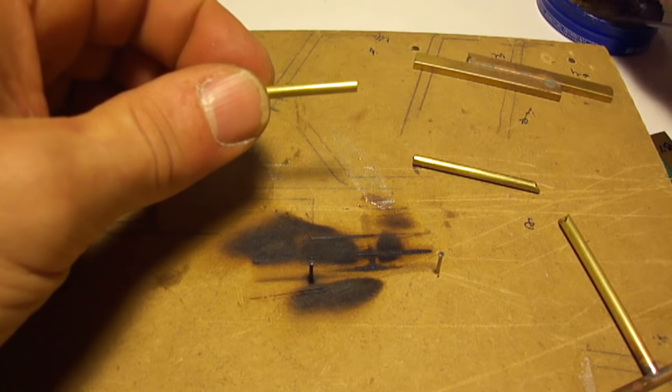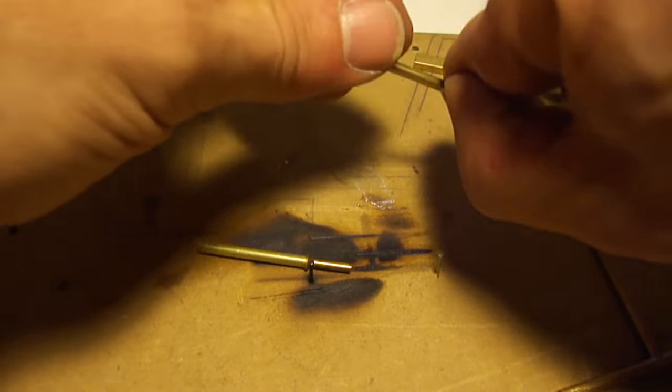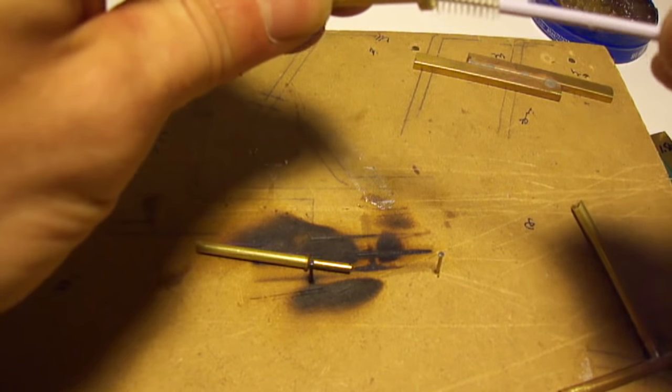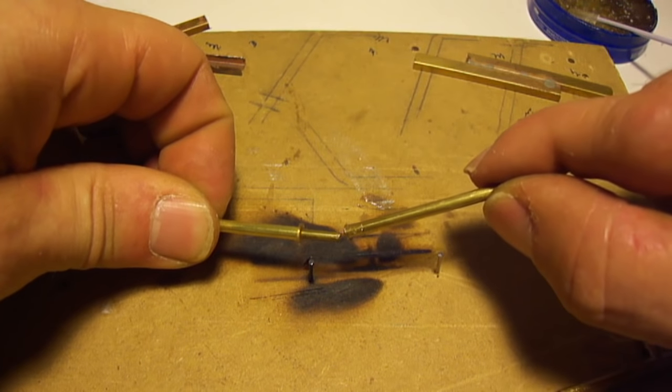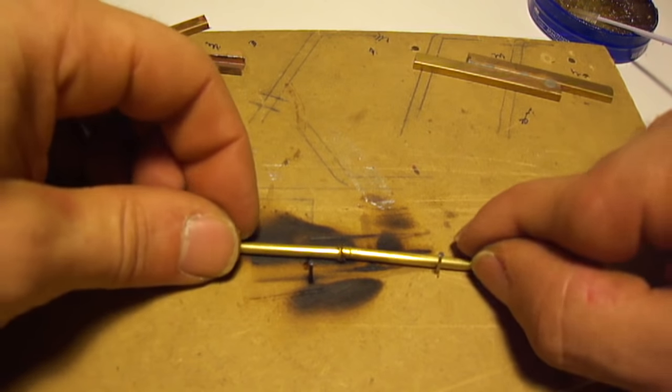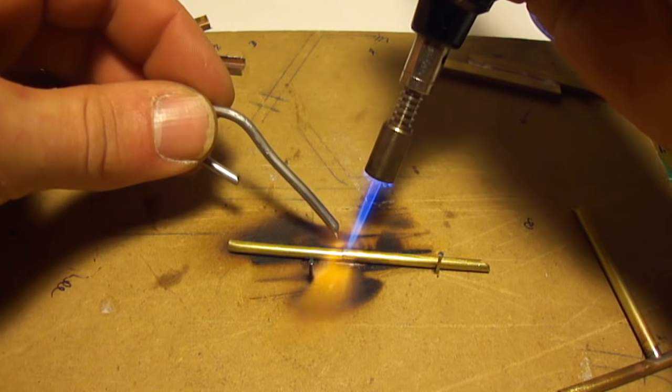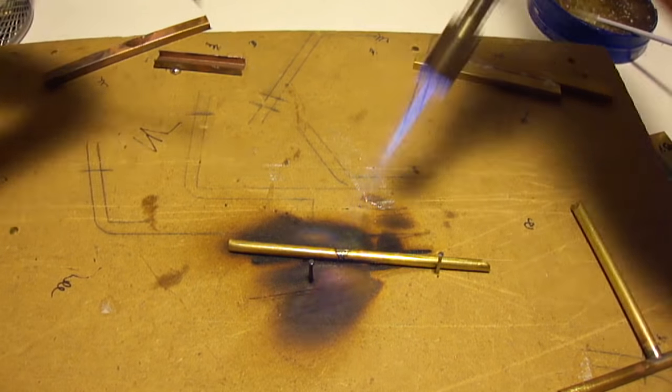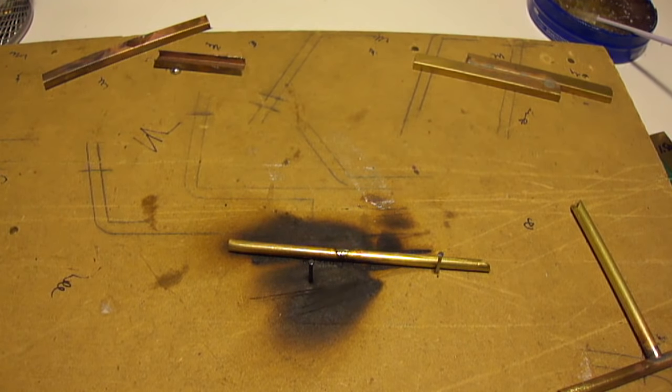So with that there, we'll dip this here into the flux. Slip her in. And then what I'll do is I'll take some flux here, put it on the inside there and around a little. And then, slip it inside to this. Fire the torch up. Ooh. Fire. Sweet. Let her cool down. And that'll be that.